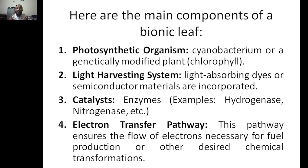For the light harvesting system, light-absorbing dyes can be used, which have the property of light absorption, or semiconductor materials can be incorporated. For example, nanotechnology has enabled a wide range of applications including quantum dot solar cells. Quantum dots are cadmium-based nanomaterials less than 10 nanometers in size, and these nano-semiconductor materials can give the highest efficiency imaginable in solar cells.